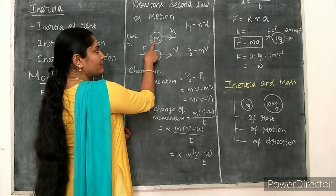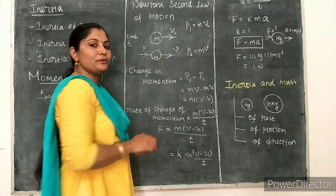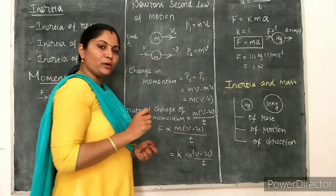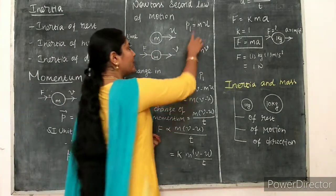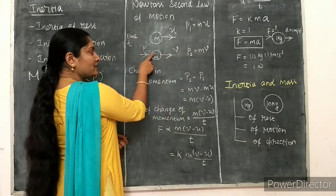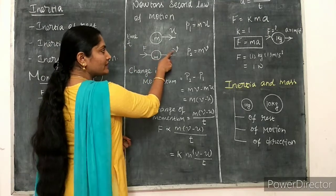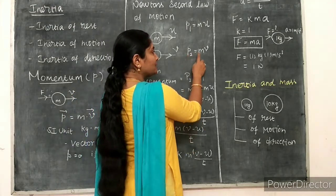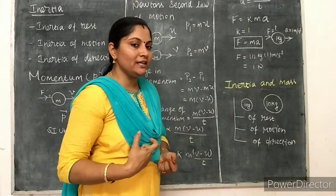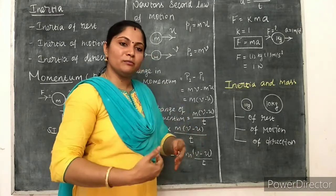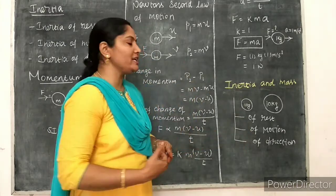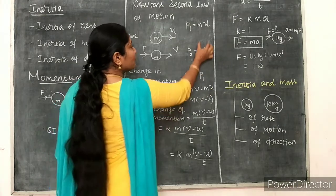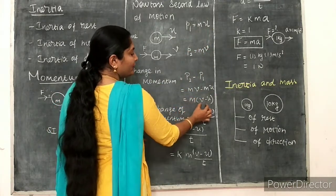Consider an object of mass M initially moving with velocity U — the initial velocity. The initial momentum P1 equals M into U. After a certain force acts on the object for a time T, it moves with final velocity V. The final momentum P2 equals M into V. The change in momentum equals final momentum minus initial momentum, which gives M into (V minus U).